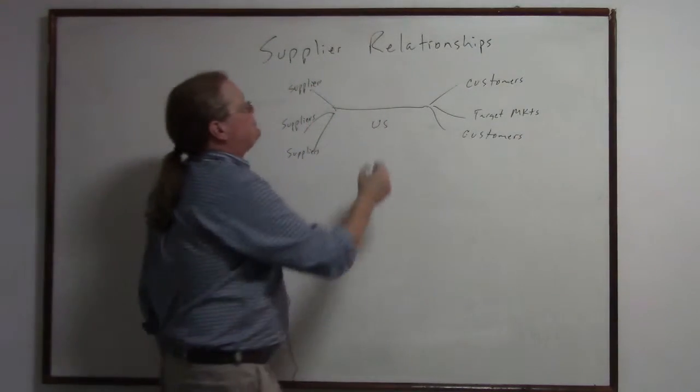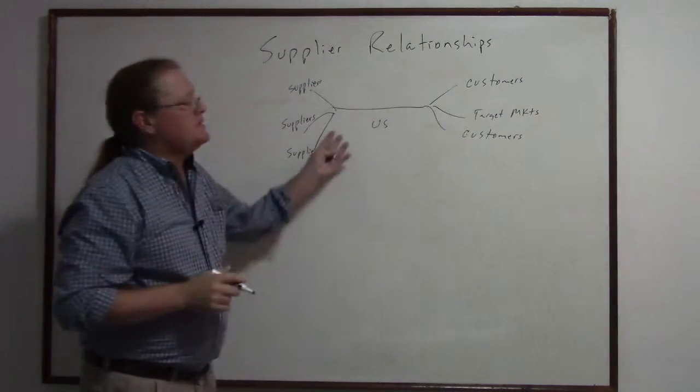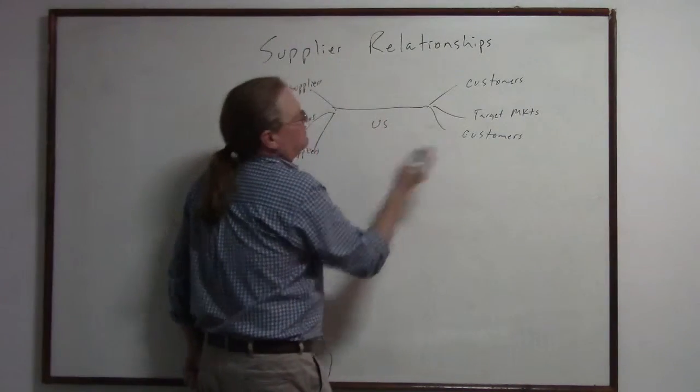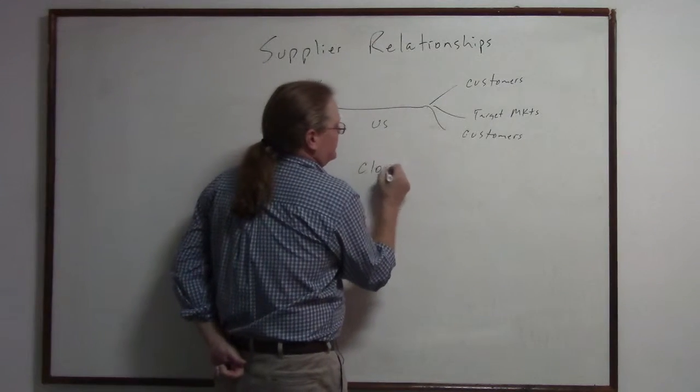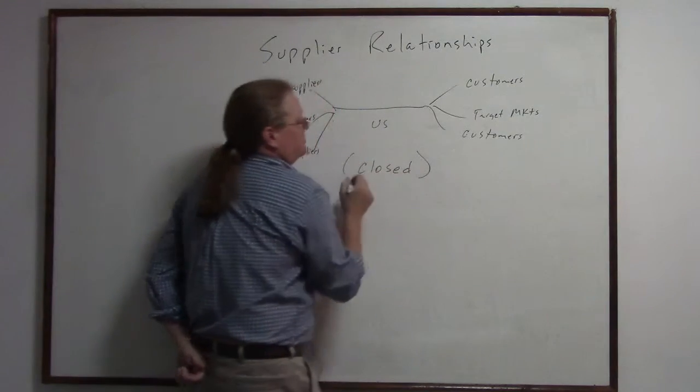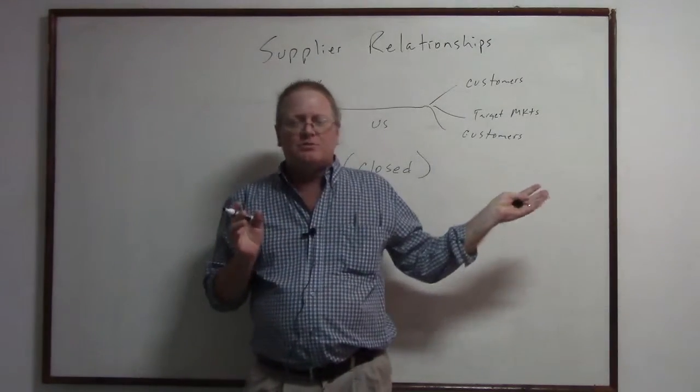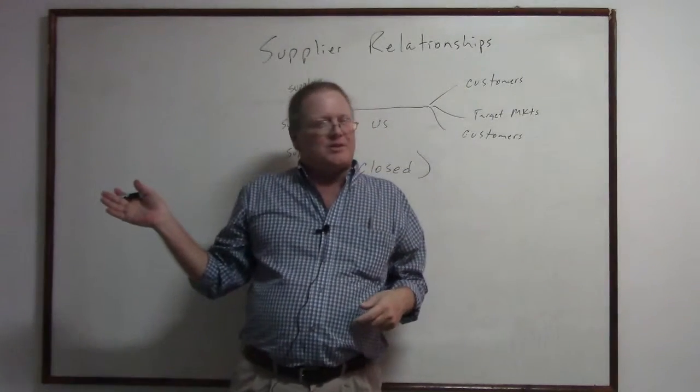So this is a little chart that Deming did, and as I mentioned before, a lot of people just operate in a closed system. And they don't talk to the customer, they don't really talk that much to the supplier.